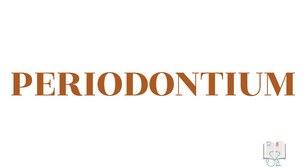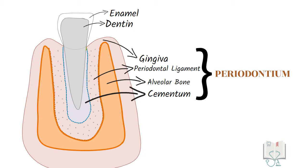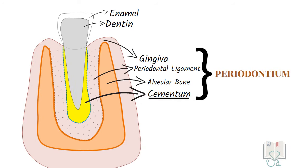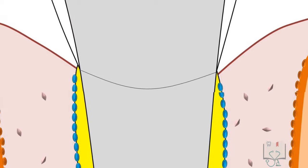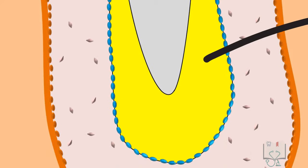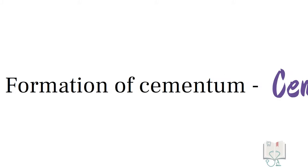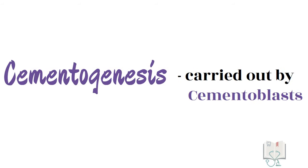The periodontium is the tissue which forms the supporting structure of a tooth. In it, cementum lies between radicular dentine and periodontal ligament, extending from the cementoenamel junction to the apical foramen. Formation of this cementum is called cementogenesis, which is carried out by cells called cementoblasts.